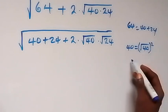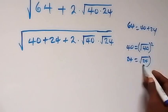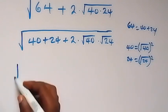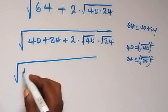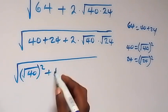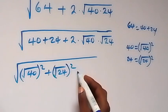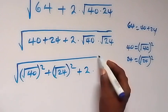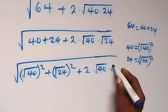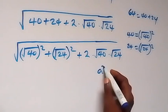Now 40 can be written as (root 40)² and 24 can be written as (root 24)², since squaring a square root returns the original number. So we can write this as the square root of (root 40)² + (root 24)² + 2 times root 40 times root 24.